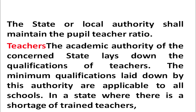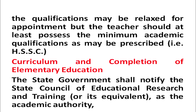The state or local authority shall maintain the pupil-teacher ratio, which should not be more than 30 students per one teacher. The academic authority of the concerned state lays down the qualification of teachers, and teachers should be recruited as per those qualifications. Where there is a shortage of trained teachers, the qualification may be relaxed for appointment, but the teacher should at least possess the minimum academic qualification prescribed by the government.